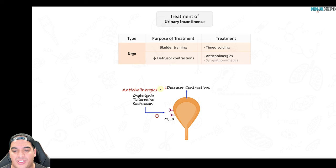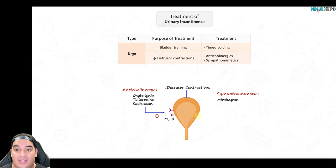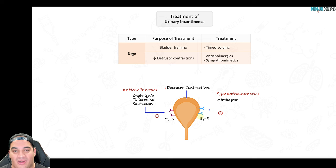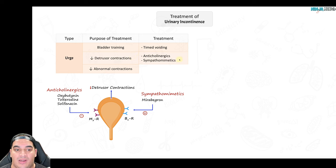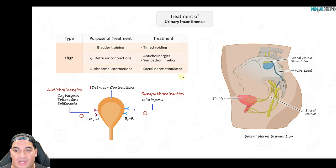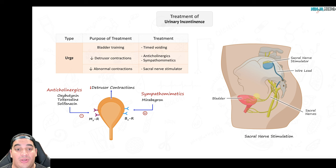If patients have side effects from anticholinergics, a sympathomimetic alternative is mirabegron — it acts on beta-3 receptors on the bladder, mimicking norepinephrine to inhibit contractions and relax the muscle, reducing detrusor contractions and incontinence episodes. For patients with neurological dyssynchrony who don't respond to bladder training or medications, a sacral nerve stimulator can provide inhibitory input to the bladder to restore better control.